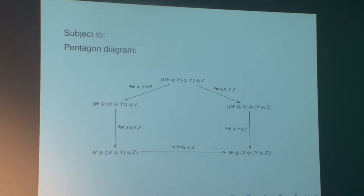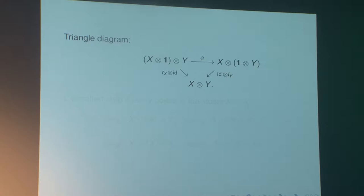The pentagon diagram requires the commutativity for all objects W, X, Y, and Z. And there is a similar diagram for the left and right unit constraints, which are the isomorphisms L and R.